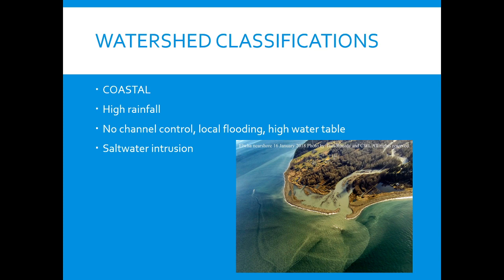Coastal watersheds typically have high rainfall and no real control for the channels, so you get flooding. The water table is very high because there's more water, so the water doesn't go as deep into the surface. You can also get saltwater intrusion into the watershed, which causes the freshwater to no longer be fresh. These are also known as estuaries.